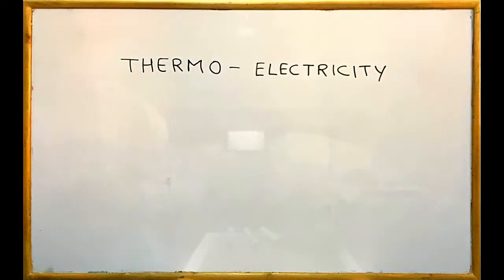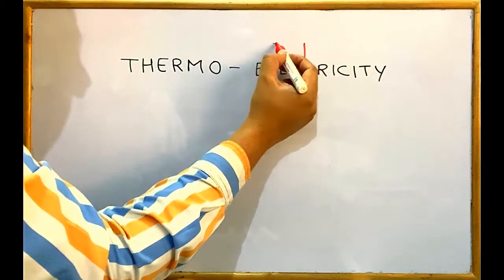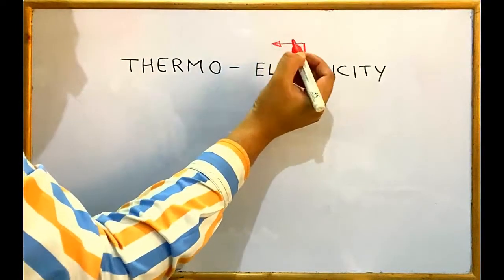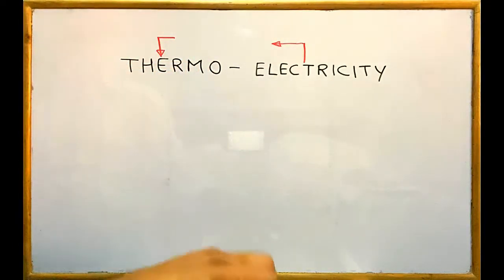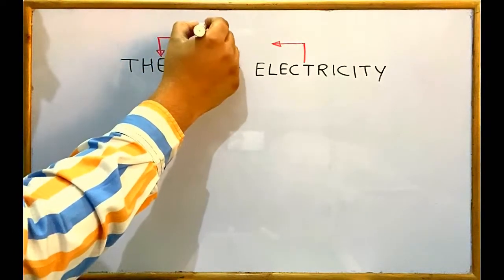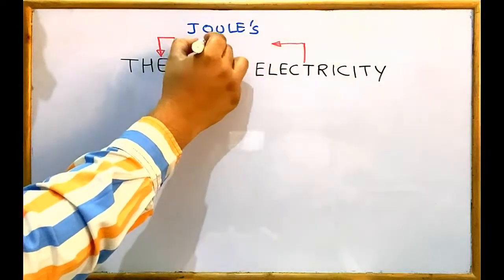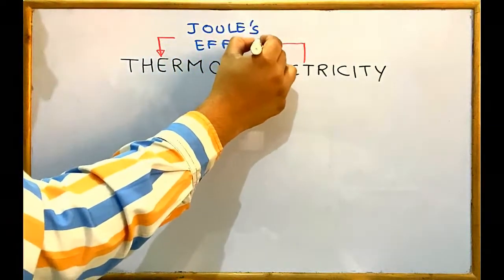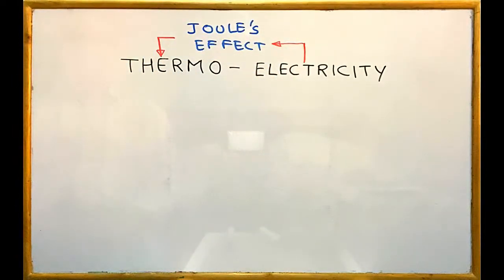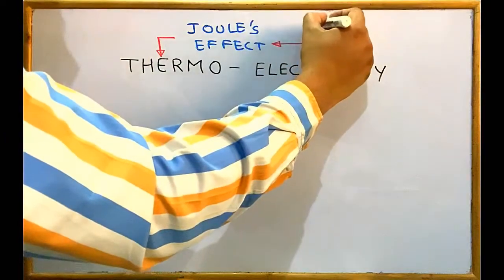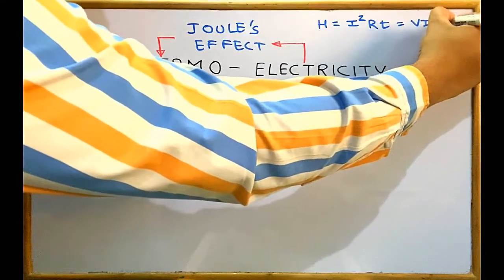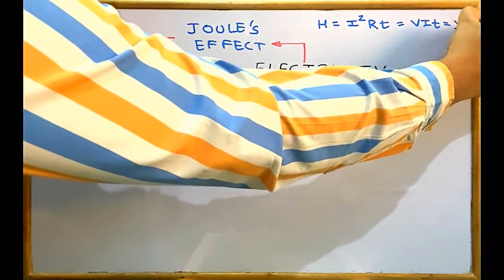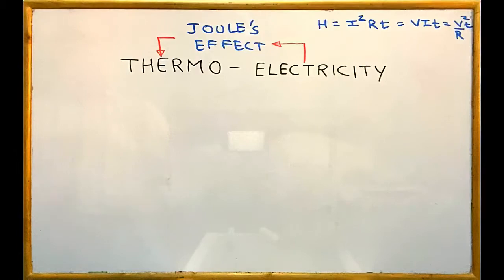Can we convert electricity to heat? Yes, we already know how to convert electricity into heat. That effect is called Joule's effect. Joule's effect is converting electricity to heat energy, and the formulae are H = I²RT, or VIT, or V²/R × T.